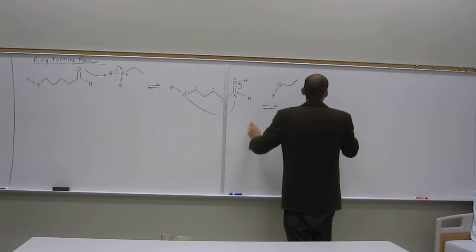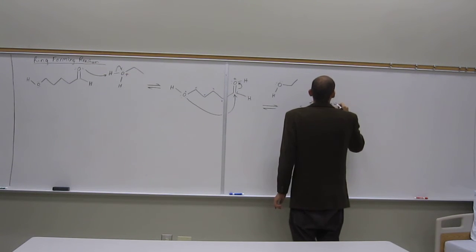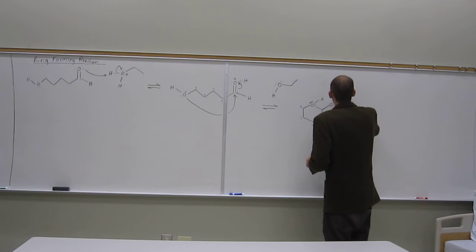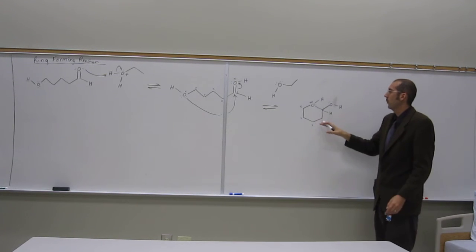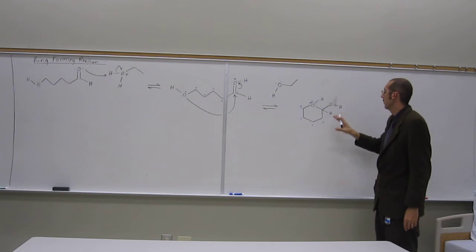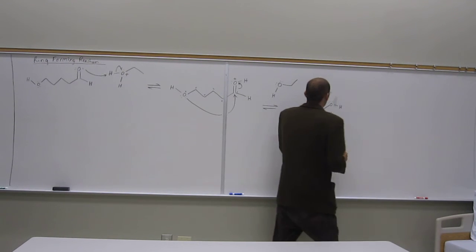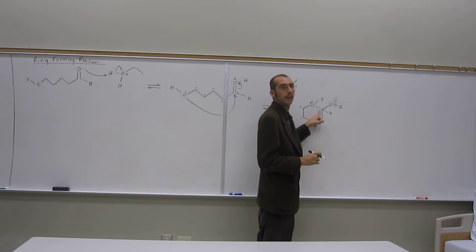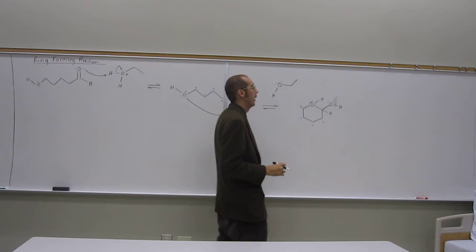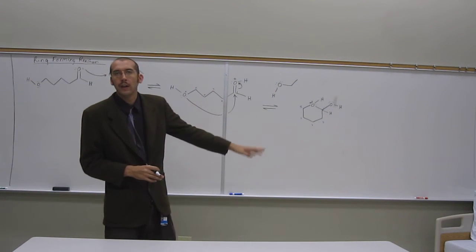Well, there's the OH group, the hydroxyl group that we've made, and there's the hydrogen still. Okay? And, of course, there's the two hydrogens on all of those, but let's just kind of focus on that. And, of course, you're making a stereocenter here, but we're not going to worry about it right now. Okay? In fact, you're making both enantiomers, so.